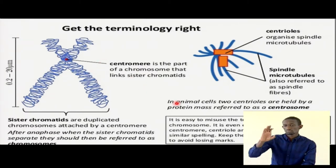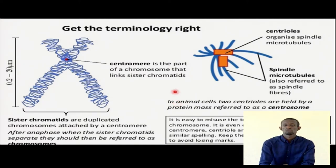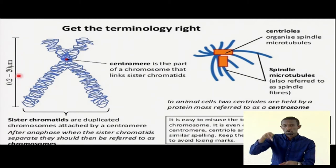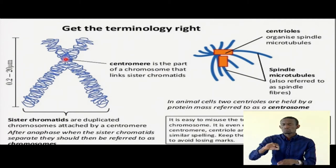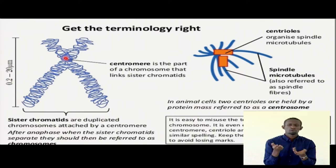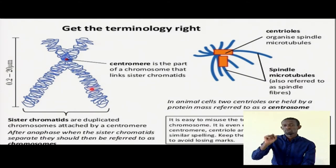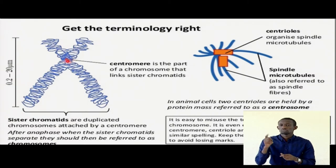Centromere, centriole, centrosome — remember that these are proteins that put the structures together. Here, at this location, we do not have very important genes or components. So we talk of locus, loci — positions of genes. They are around these areas, here, but not at the centromere.